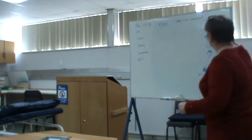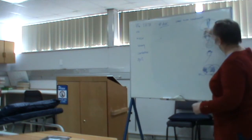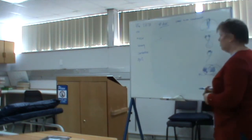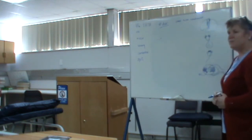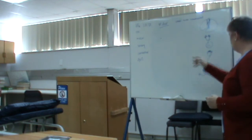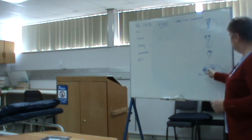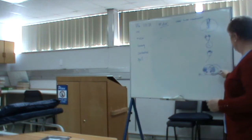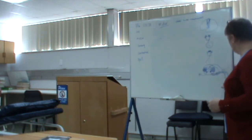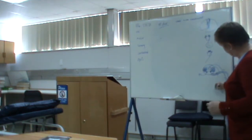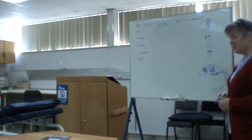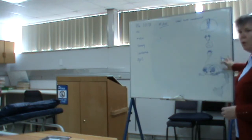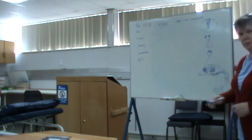If you have an upper motor neuron lesion, the problem is from the cortex down through the spinal cord. The lower motor neuron runs from the anterior horn cell outwards — including anterior horn cell disease, the peripheral nerve, roots, neuromuscular junction, and the muscle — all of these give lower motor neuron signs.